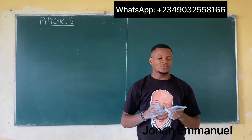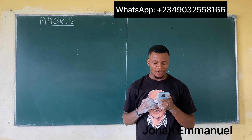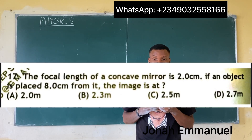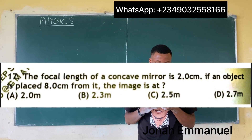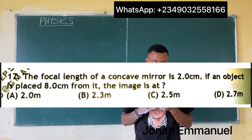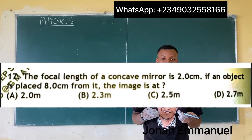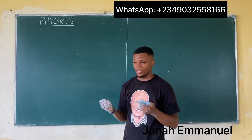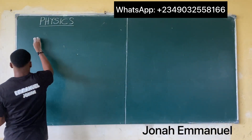Let's look at another question. This one says the focal length of a concave mirror is 2.0 cm. If an object is placed 8 cm from it, the image is at what distance? Let's get the solution.